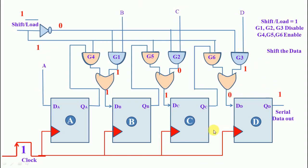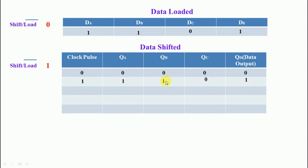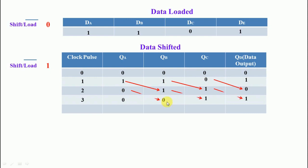This is the truth table for the parallel in serial out shift register. With control signal = 0, data 1 1 0 1 is loaded. With control signal = 1, after the first clock pulse QA=1, QB=1, QC=1, QD=1 — QD is the serial data output. After the second clock pulse, bits shift: values move one stage forward. After the third clock pulse, the zero shifts further along. After the fourth clock pulse, the remaining bits have all shifted through the output.